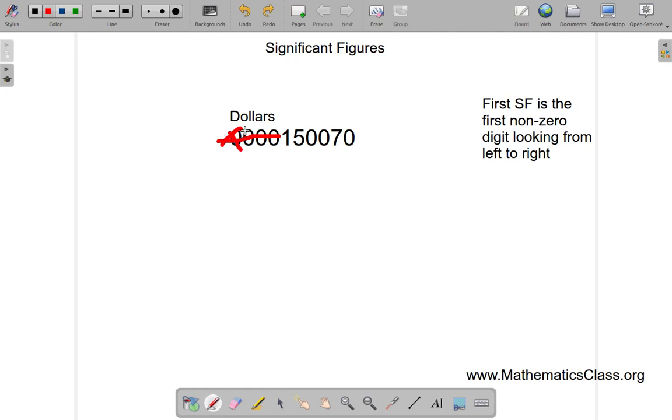We haven't reached the first significant figure yet. This one, this one, this one, these are all zero digits. This is the first non-zero digit that we see when we look from left to right. And the number of digits we have here is one, two, three, four, five, six.